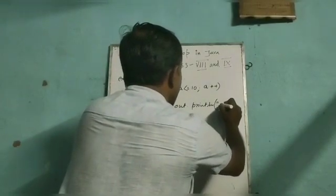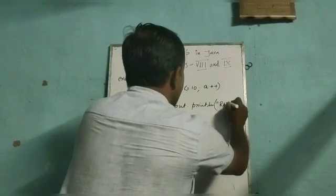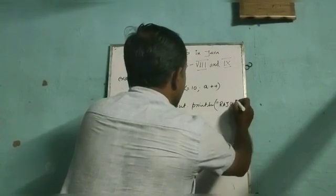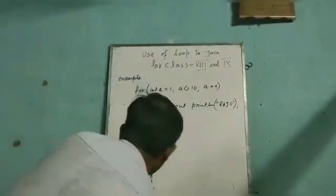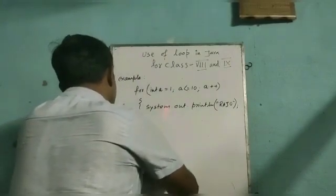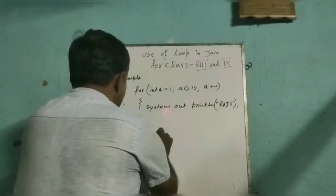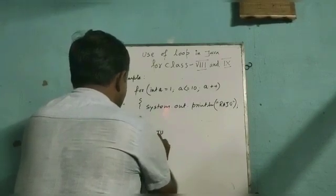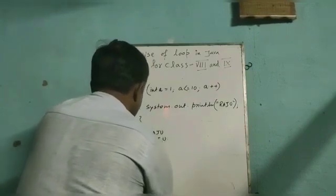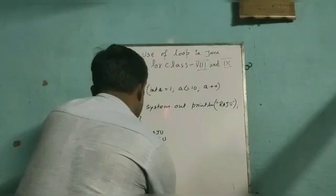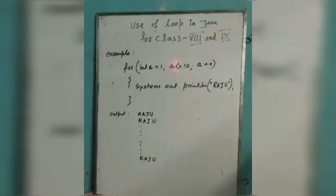Let us see another example. Here we will print one name for 10 times on the screen. The same program I have used here, only in the place of system.out.println a, I have written one name. Now as this for loop is repeating for 10 times, the name will be printed 10 times.